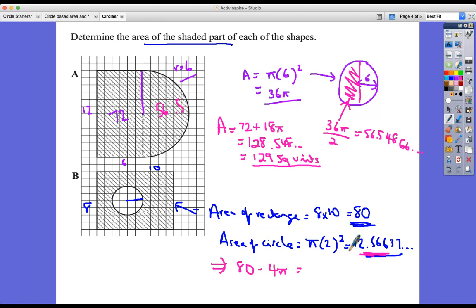Which equals 80 minus 4π, which equals 67.4 to three significant figures. 67.4 square units to three significant figures.